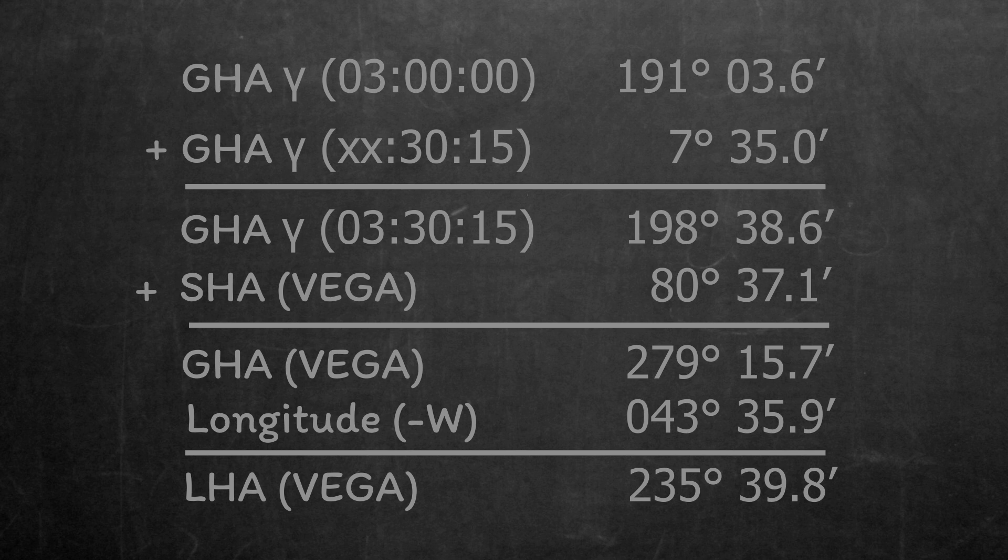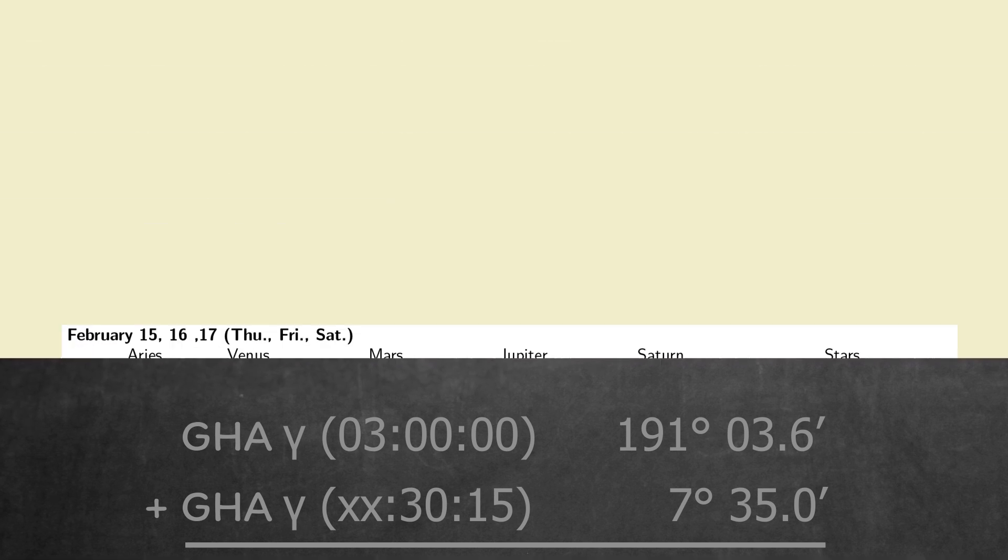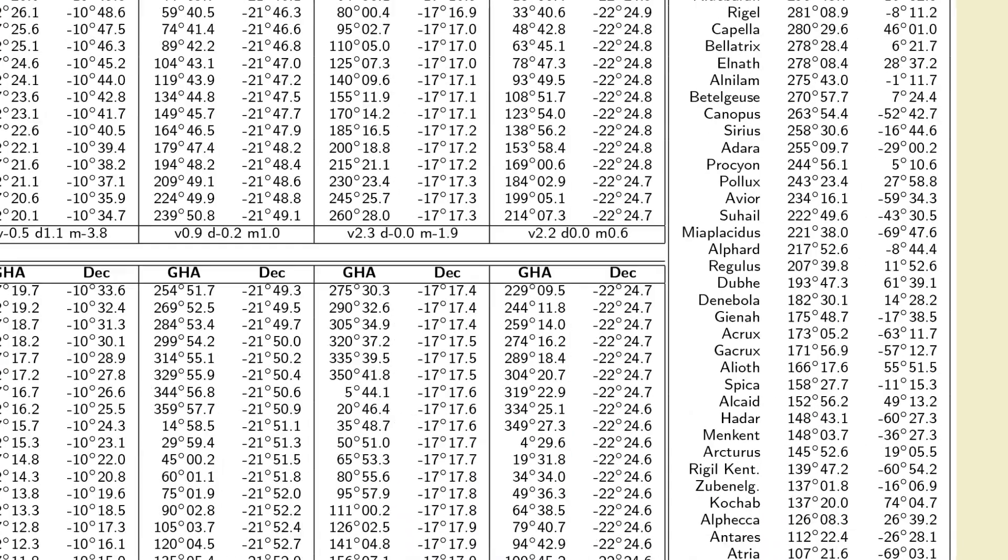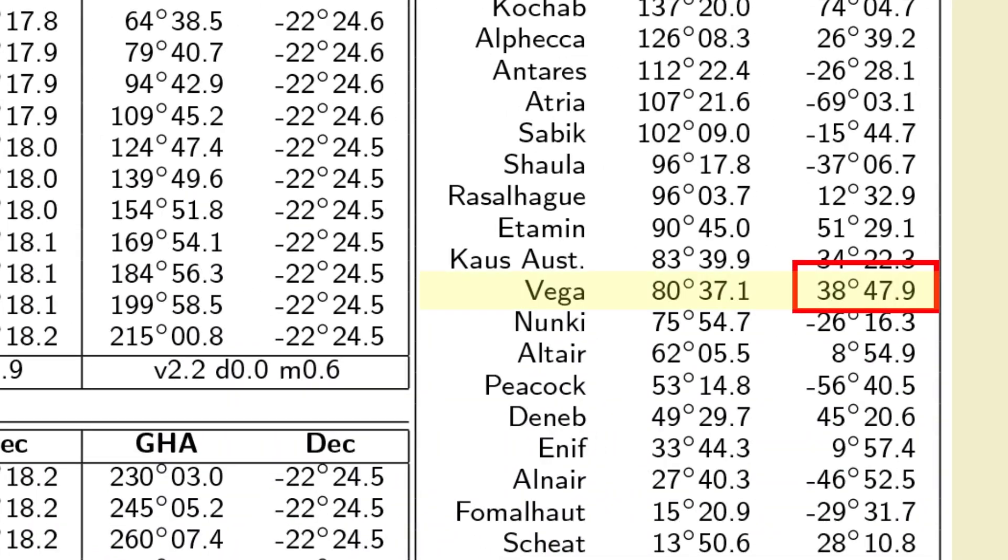The only other data we need is the declination of Vega, which you probably spotted already. You read it directly from the star's table. 38 degrees, 47.9 minutes north. Some almanacs will write north. In our case, we know that north are the positive numbers. If it's negative, then it would be south.